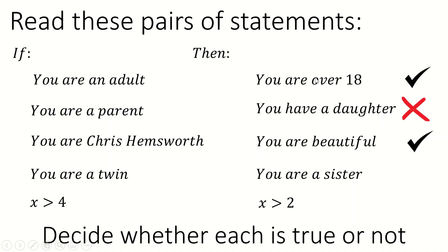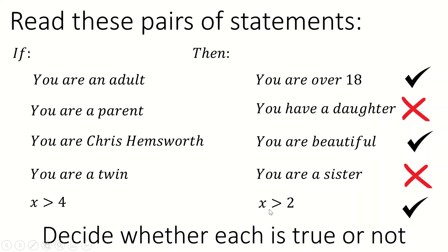The third statement differs from the first two because we're thinking about definitions, which were pretty much inarguable, whereas this one is arguably subjective, though most people would agree. If you're a twin, then you are a sister — I don't think that's true. You could be a girl who's a twin and be both, but you could also be a boy who's a twin and then you're not a sister. If x is greater than 4, then x is greater than 2 — that is necessarily true. So my results are: tick, cross, tick, cross, tick.